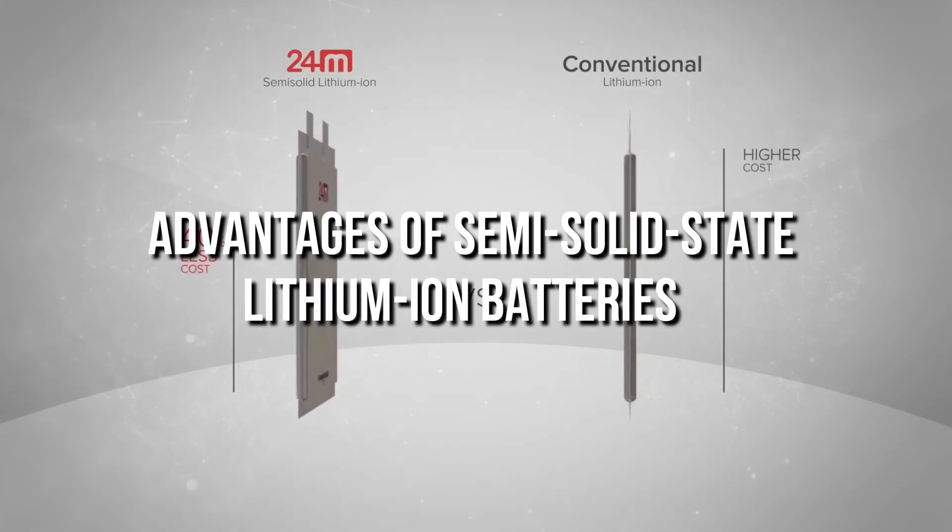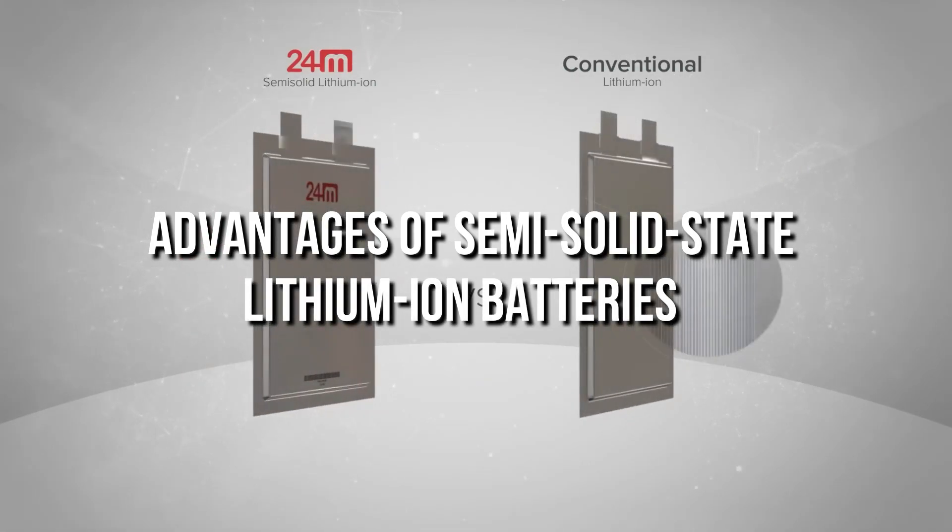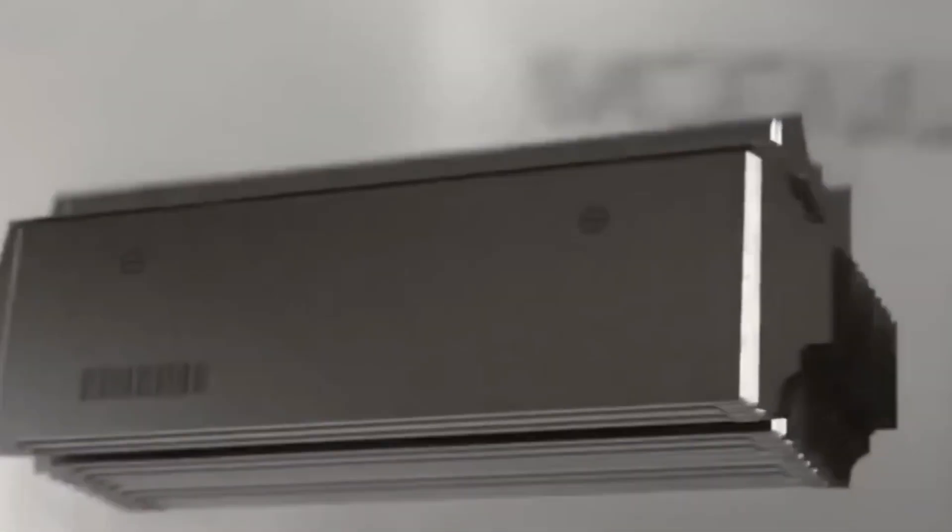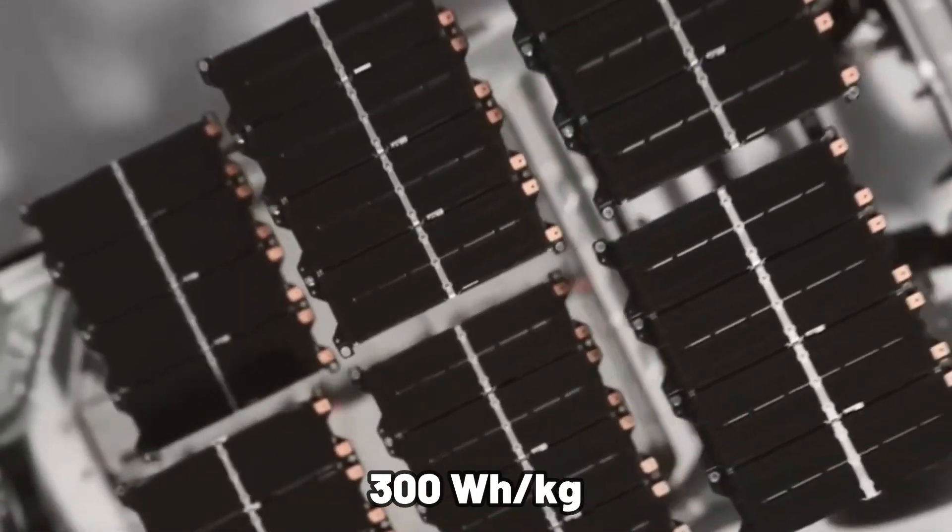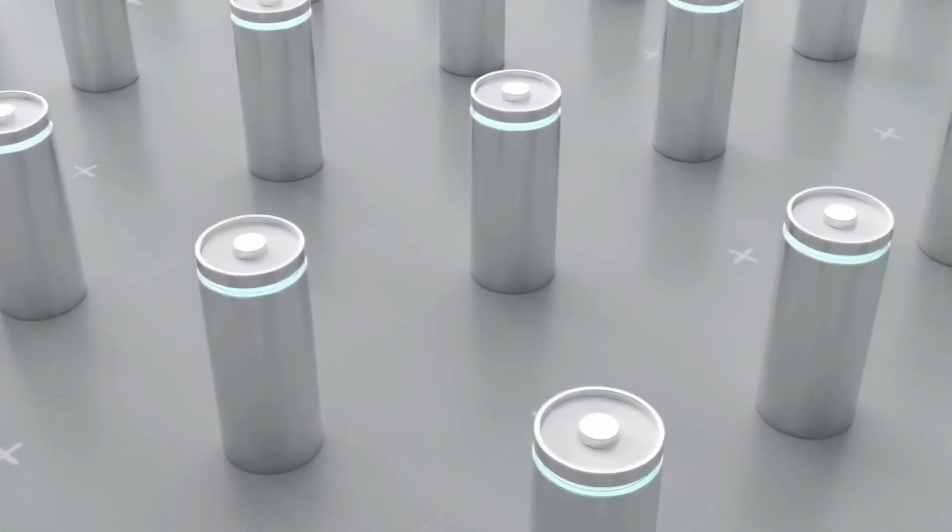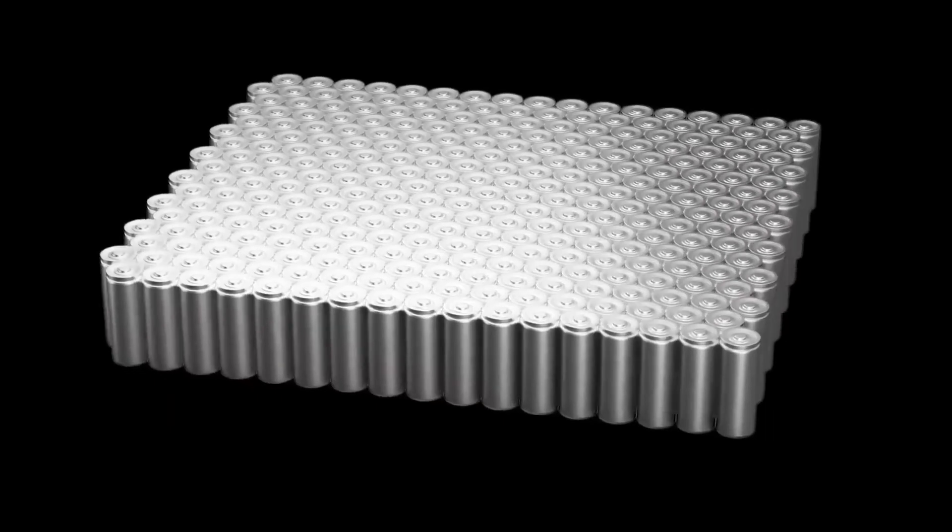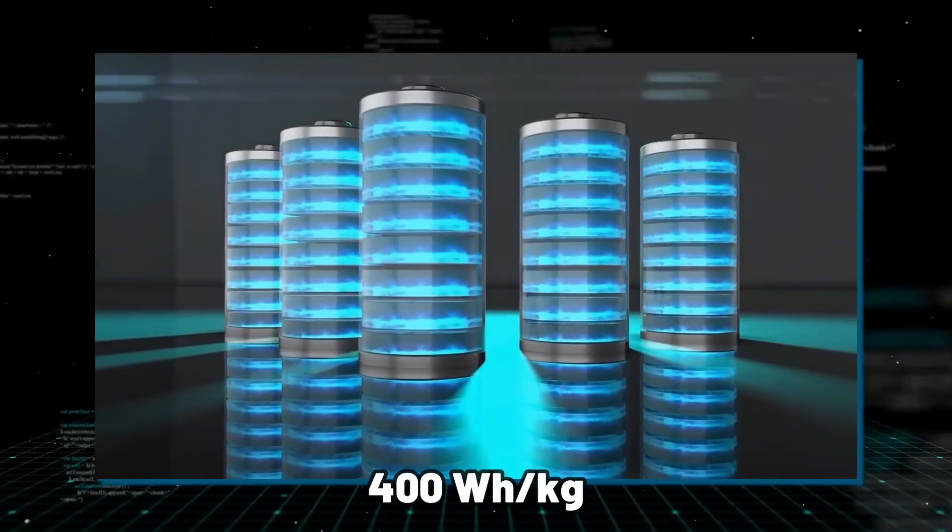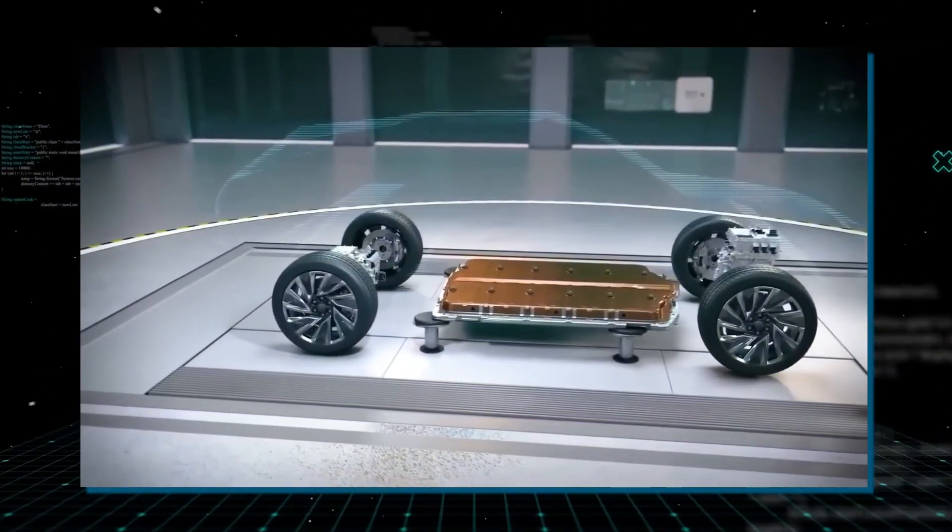Advantages of semi-solid-state lithium-ion batteries: It is common knowledge that the maximum capacity of traditional lithium-ion batteries is 300 Wh per kilogram. In contrast, the capacity of first-generation semi-solid-state lithium-ion batteries might reach up to 400 Wh per kilogram.